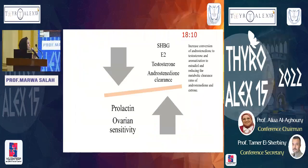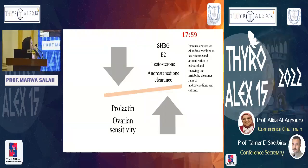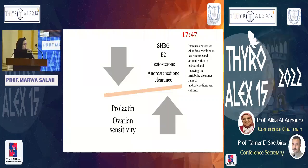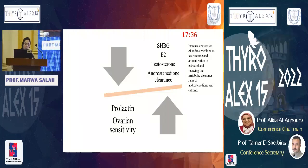In hypothyroidism there is diminished liver production and lower levels of sex hormone binding globulin, so total estrogen and testosterone levels are altered. There is also a reduction in the metabolic clearance of androstenedione. On the other hand, there is an increase in prolactin levels, increased free testosterone and estrogen levels, and ovarian hypersensitivity to the effect of gonadotropins, which leads to increased ovarian size and development of ovarian cysts in hypothyroid patients.